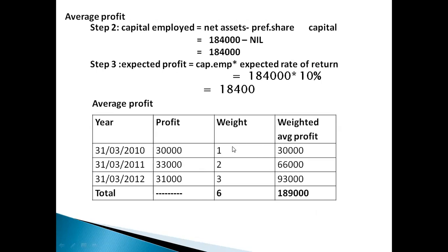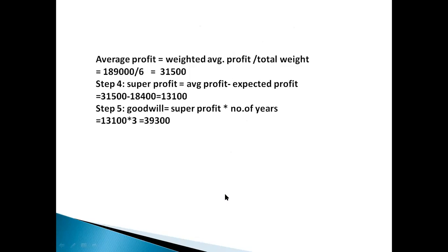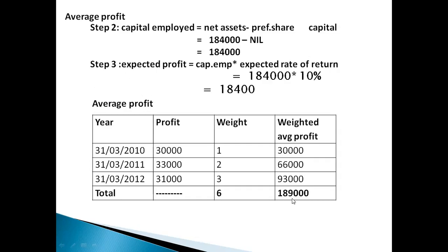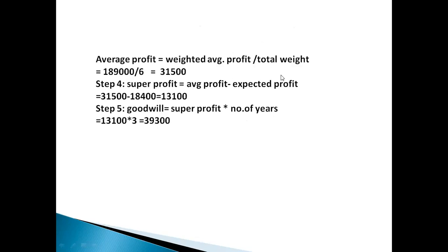Weighted average profit is calculated. Total weighted profit is 1,89,000. Average profit equals weighted average profit divided by total weight. Total weight is 6. The answer is 1,89,000 divided by 6, which equals 31,500.